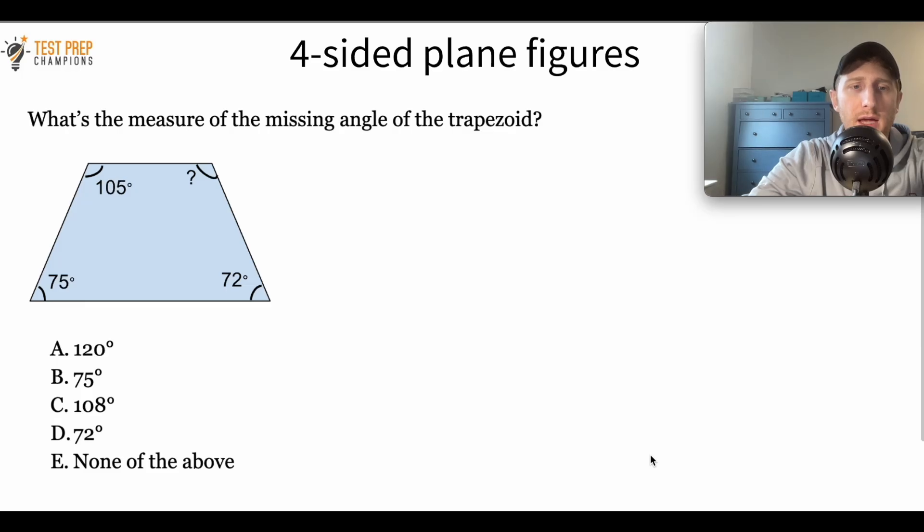What's the measure of the missing angle of the trapezoid? Is it A, B, C, D, or E?